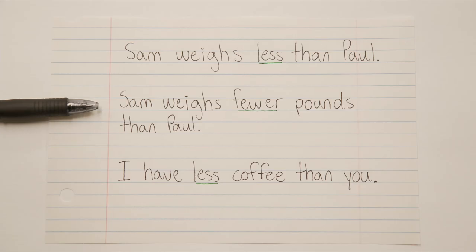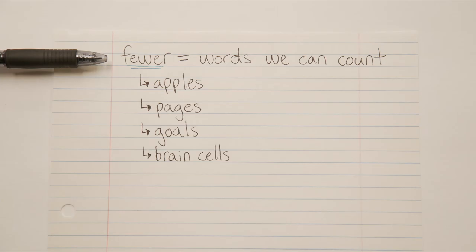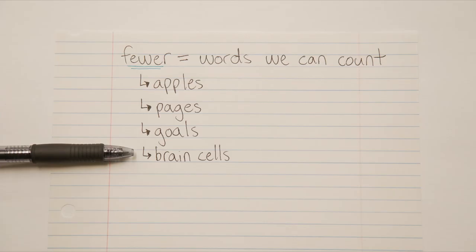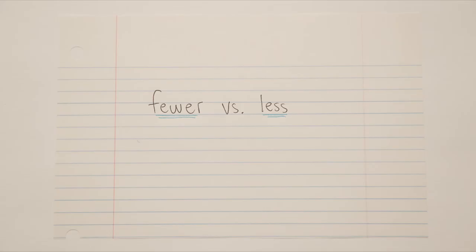We've got a similar situation with: I have less coffee than you. You might think we can count that in cups or liters, but those are not the words we used. We said coffee, and you can't count that word. While people do say 'two coffees' as slang when ordering at a restaurant, when used properly, coffee is not countable. So with words that we can count, we use fewer — fewer apples, fewer pages, fewer goals. With words we cannot count, we use less — less courage, less confidence, less air, less space. Look at the actual word being used and ask yourself if that word is countable.